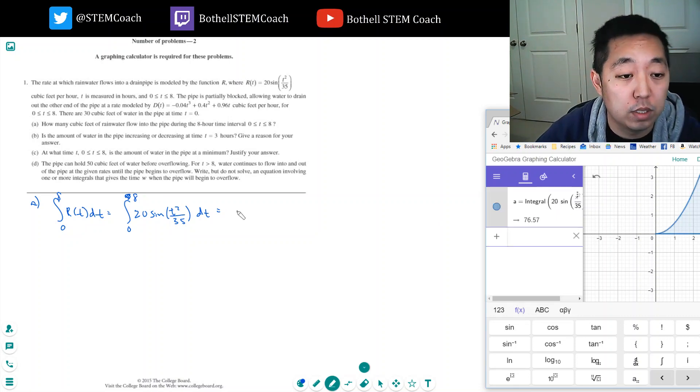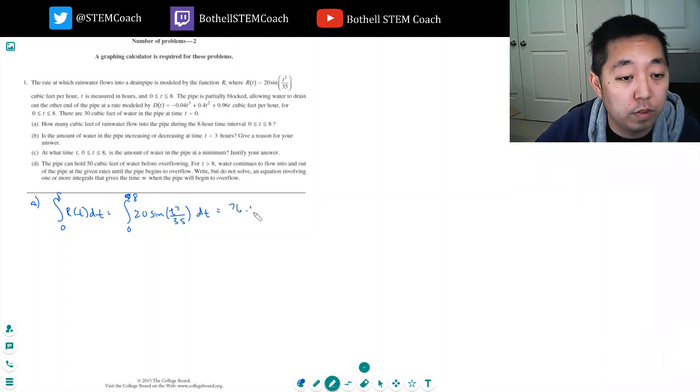76.57, alright, cool. I just didn't put the bounds in. 76.57, and the rate was cubic feet per hour, and I integrated over 8 hours, so this is just cubic feet, feet cubed. Okay.